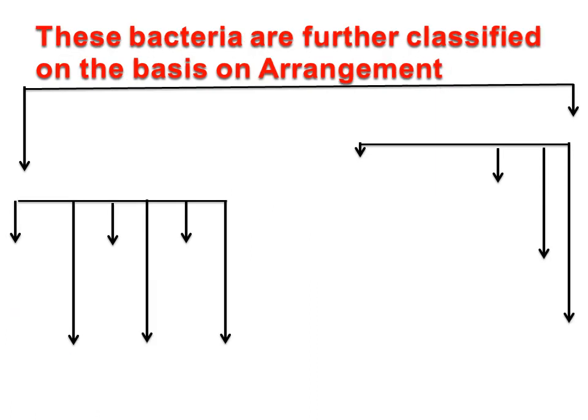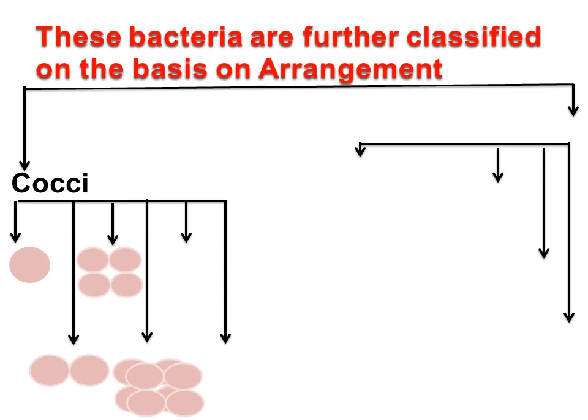These bacteria are further classified on the basis of arrangement. Cocci are classified further on the basis of arrangement as: Coccus — single celled; Diplococci — arranged in pairs; Tetrads — arranged in groups of fours; Sarcina — arranged in groups of eights.